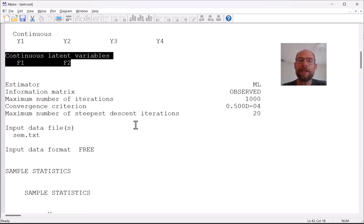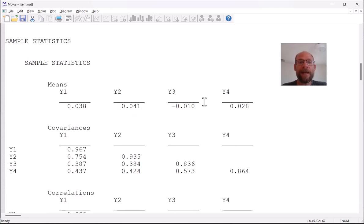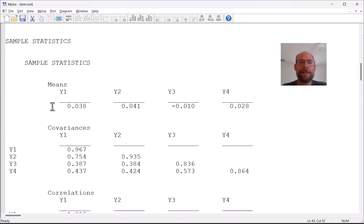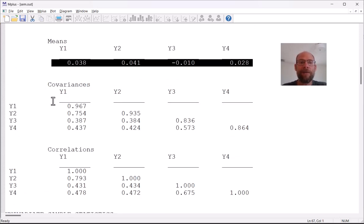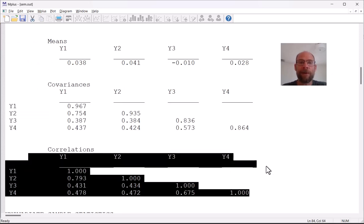When you have continuous indicator variables in factor analysis and structural equation modeling in Mplus then the default estimator that Mplus uses is maximum likelihood. You can see that here under estimator ML and then below that we obtain sample statistics where we can check the observed variable means, covariances and correlations to make sure everything looks okay and is in line with our expectations.